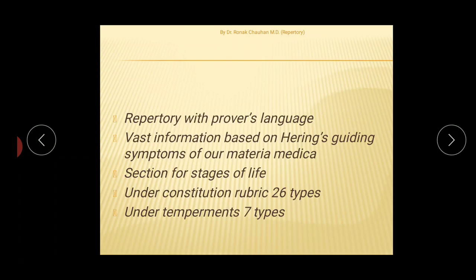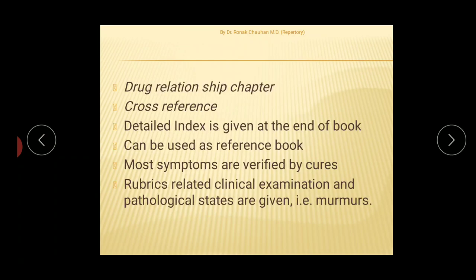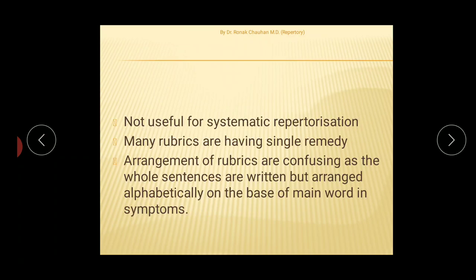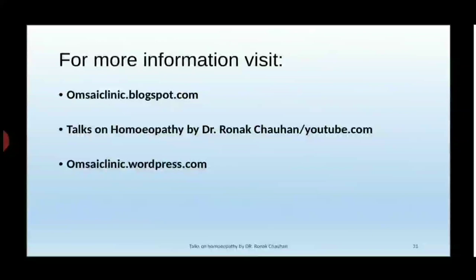The merits of this repertory include vast information based on Hering's Guiding Symptoms presented in the prover's language, a Drug Relationship chapter, cross-references, and clinically important rubrics such as murmurs and respiratory sounds. The demerits are that it is not useful for systematic repertorization, many rubrics contain only a single remedy, and the arrangement of rubrics can be confusing as whole sentences are written but arranged alphabetically based on the main word.